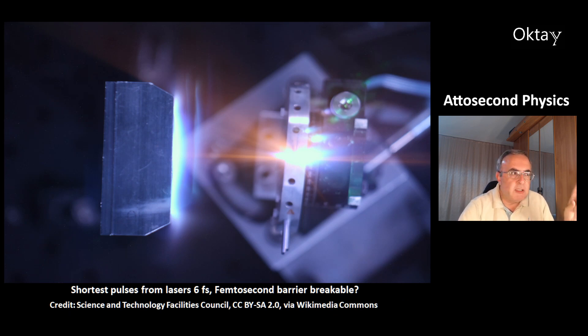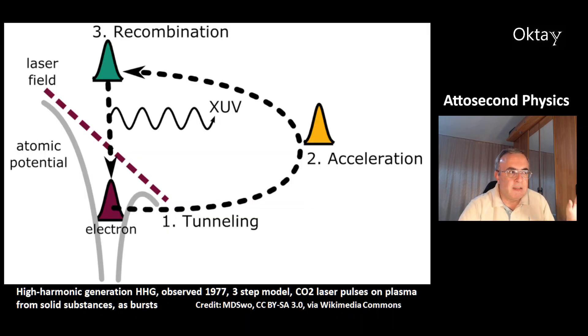For a long time, the shortest pulses from lasers were about 6 femtoseconds. And it was not clear if the femtosecond barrier was breakable or not. This is high harmonic generation. HHG was observed in 1977. This is a 3-step model made by CO2 laser pulses on plasma from solid substances.